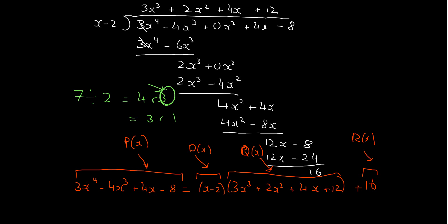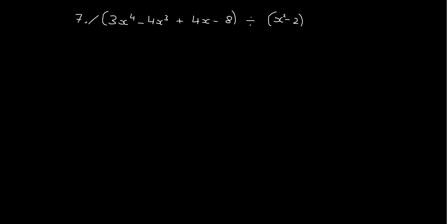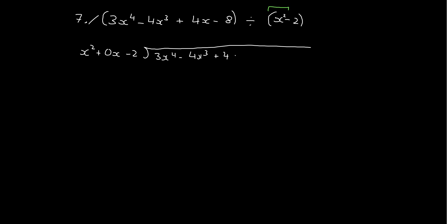Let's try a slightly trickier example. Same numbers, but the only thing I've changed is I've made this an x squared up here. So pause the video and have a go at this. Actually, before you pause, write out a 0x in this one here — it'll just make your life a bit easier doing this division. So 3x to the 4 minus 4x cubed — please pause this video at any point and try to work ahead of me to check that you can do it — plus 4x minus 8.